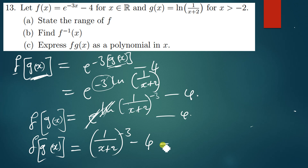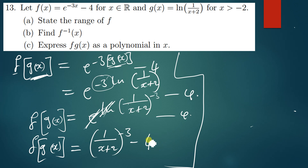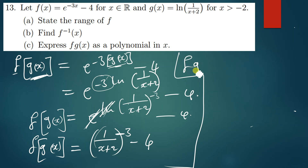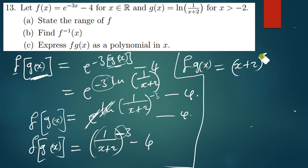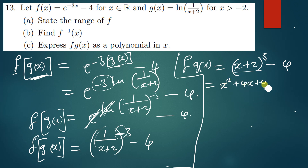To simplify further: when we get rid of the negative exponent, we flip what is inside the brackets. So we have (x+2) to the power positive 3, minus 4. If you want you can leave it here, or you can simplify further by expanding (x+2) cubed.